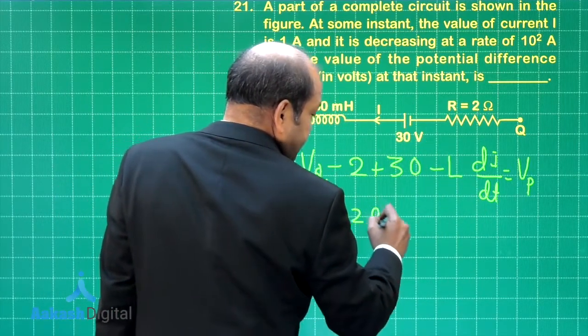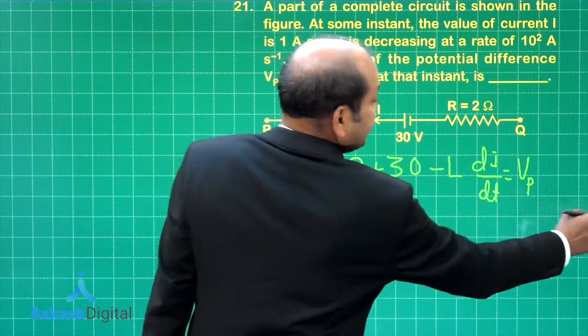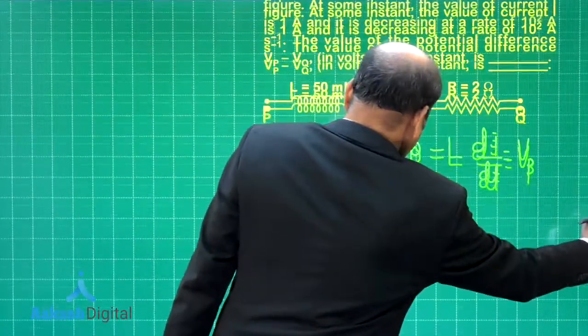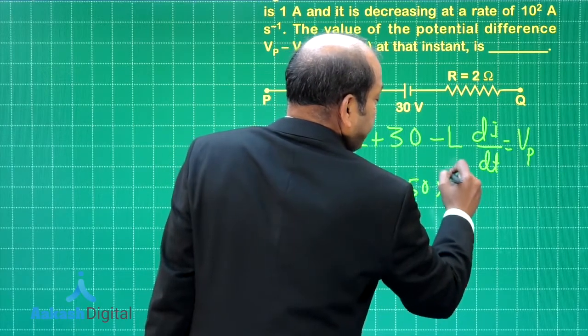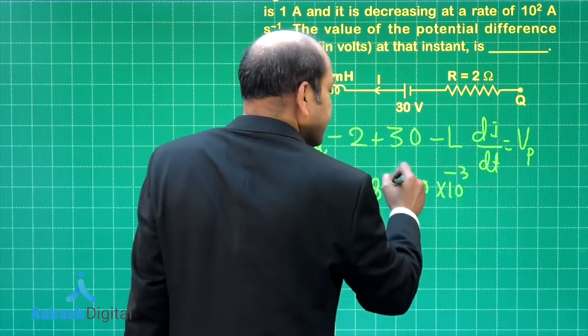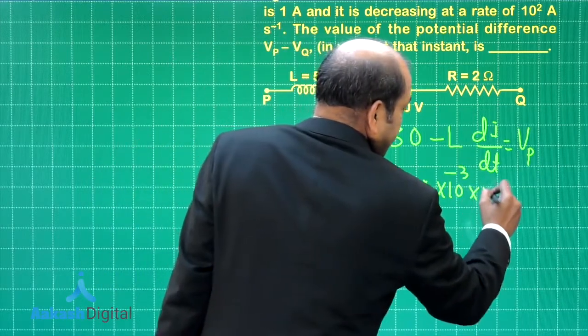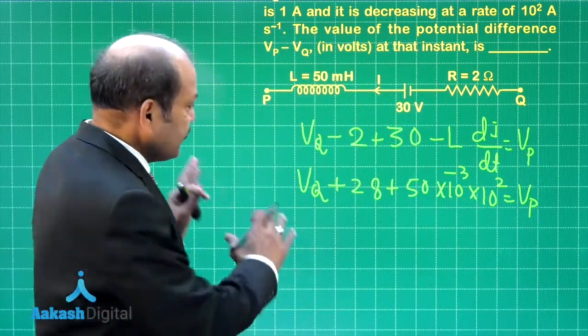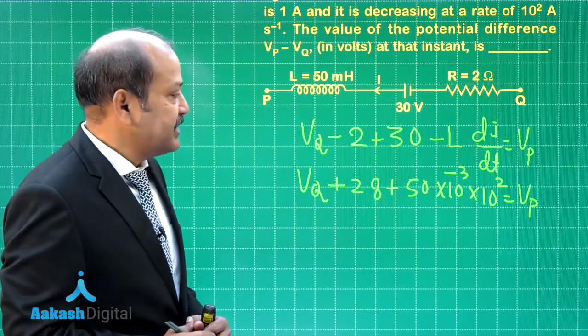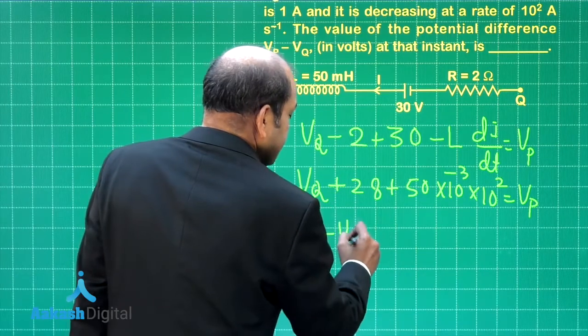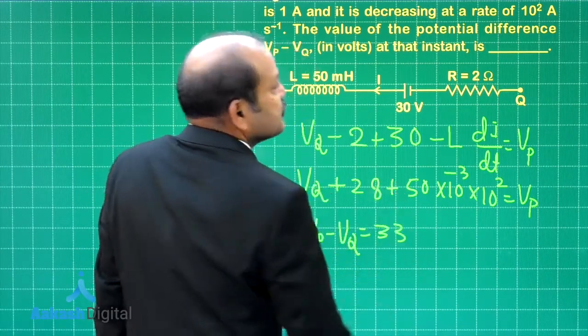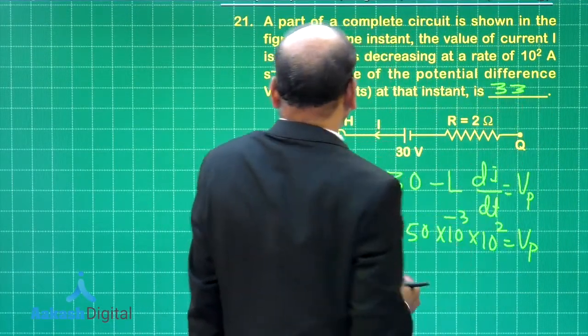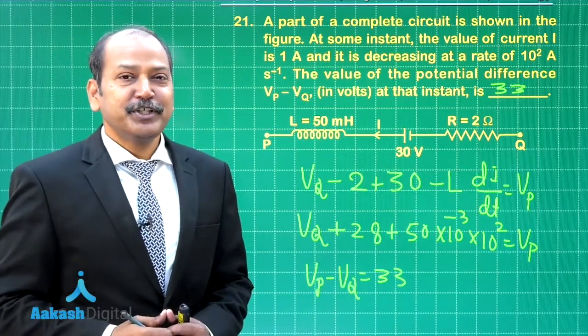So V q plus 28 minus 80 millihenry? Yes, the value of l is 50 millihenry. So 50 into 10 to the power minus 3 and then there is a minus sign coming here. So we can put a plus sign here. This is 10 to the power 2 and that is giving us the value of V p. It is a simple matter of now doing the multiplication, addition and subtraction. We find that V p minus V q comes out as 33 volt. So that means here we have to fill in 33. It is time now to go to question number 22.